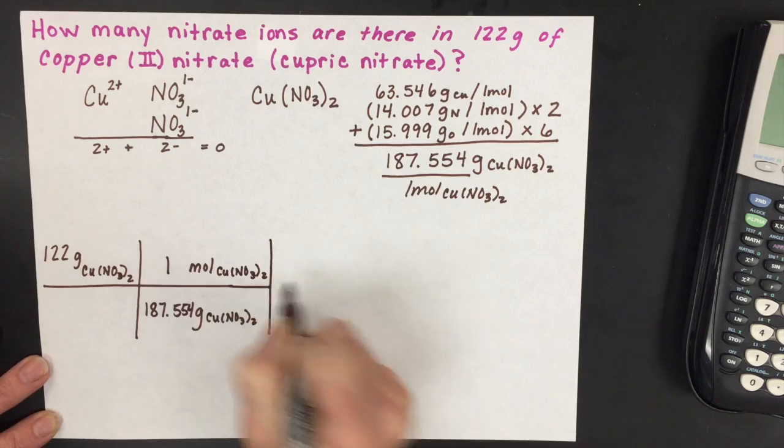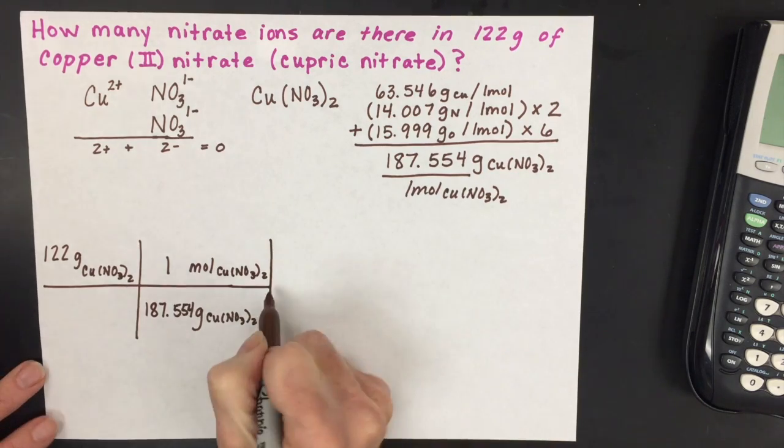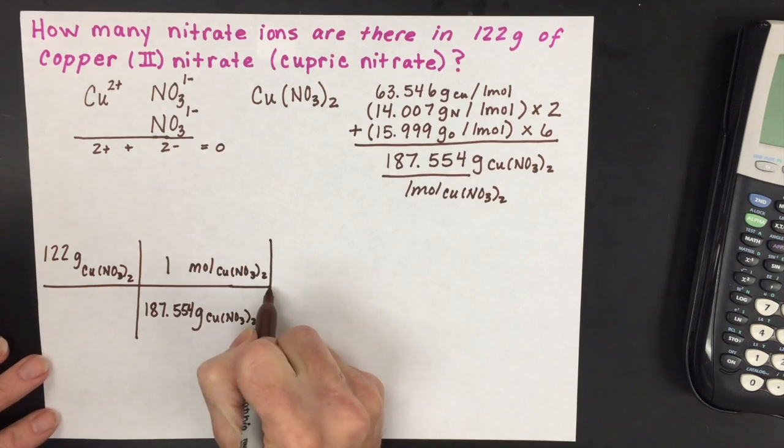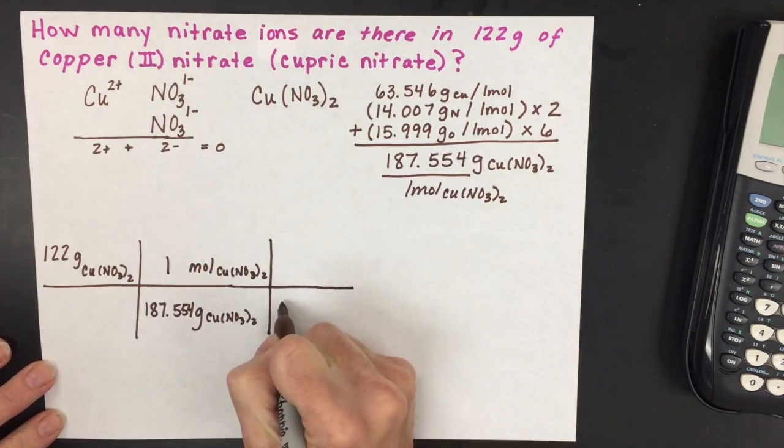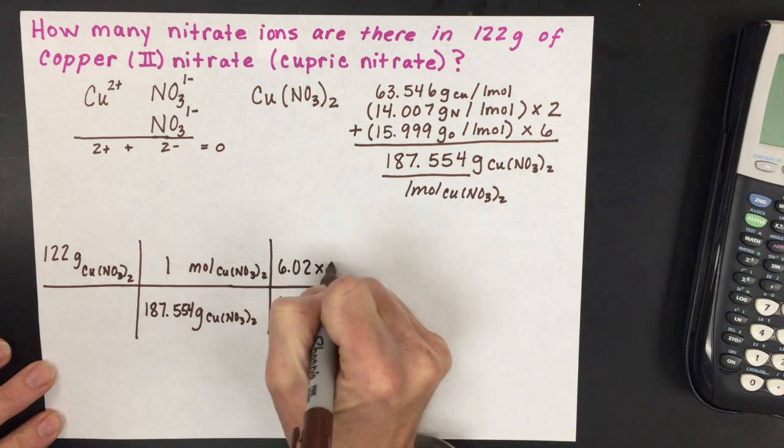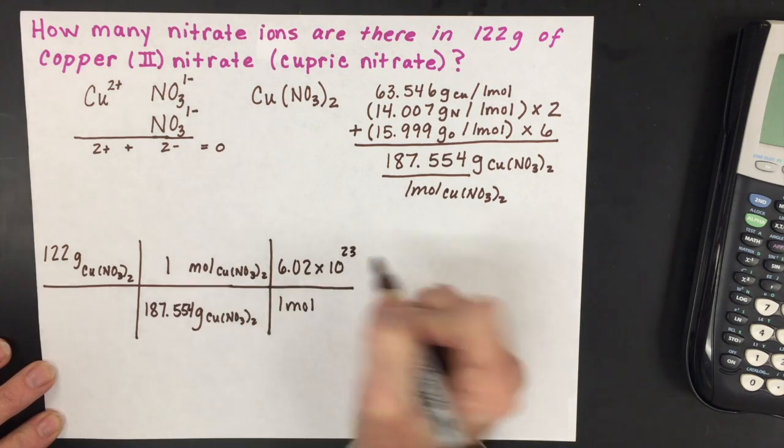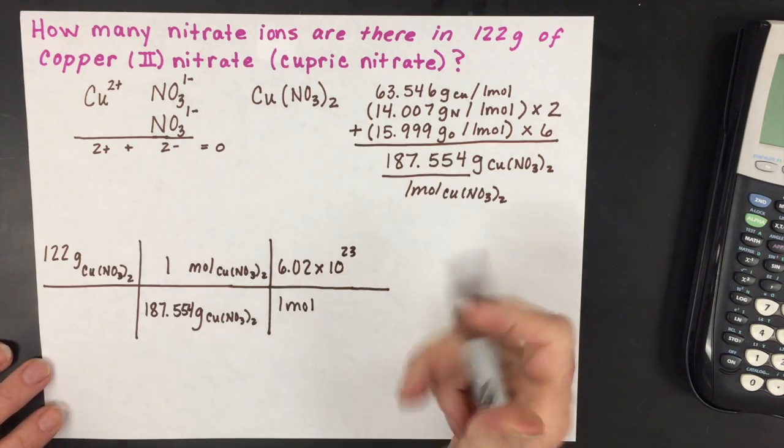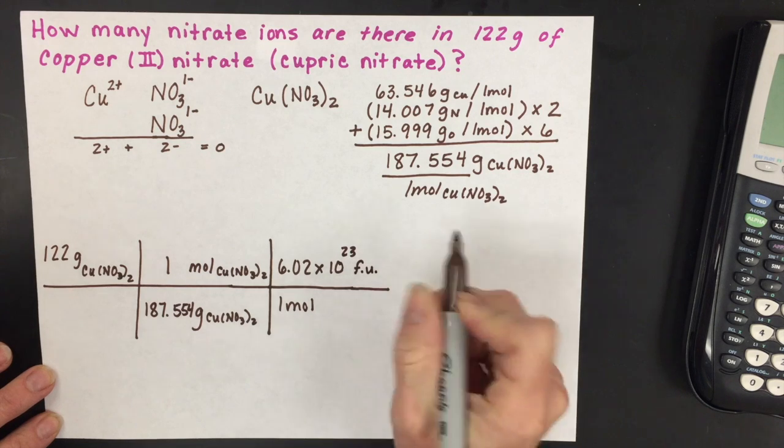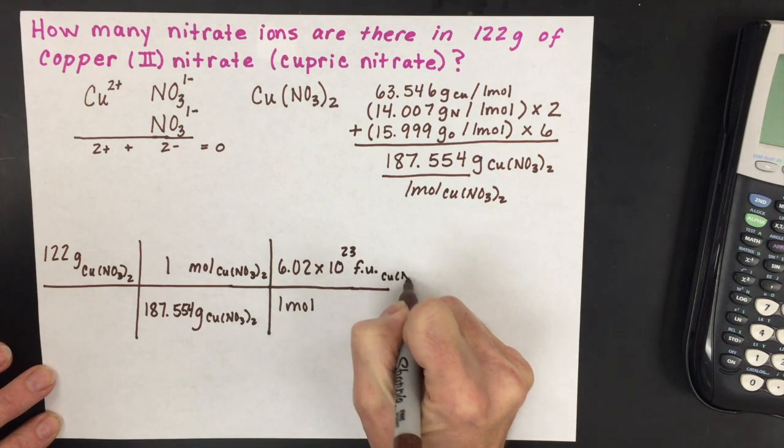If we were to stop this calculation now, we'd have the mole amount, but we want a countable particle amount. We'll use Avogadro's number, which is 1 mole equals 6.02 times 10^23 particles. It's an ionic compound, so the proper unit is formula units of copper (II) nitrate.